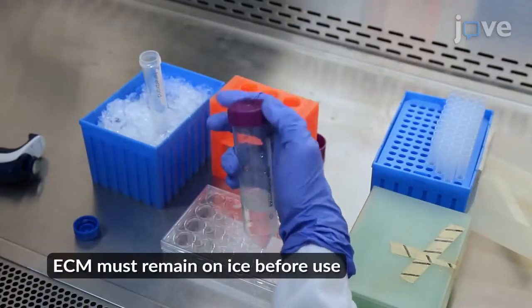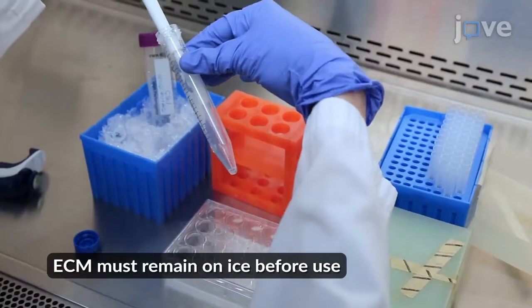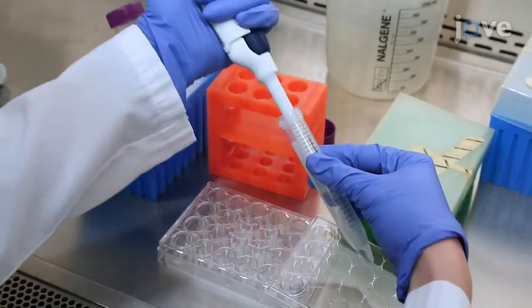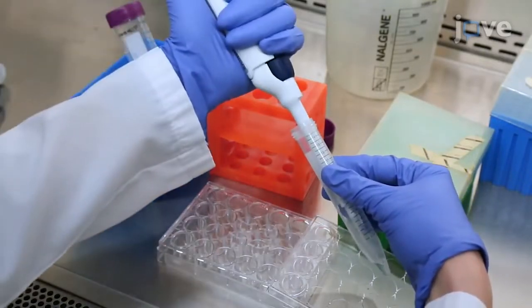Dilute the extracellular matrix, or ECM, 25-fold in cold sterile phosphate-buffered saline. Then add 100 microliters of cold diluted solution into each upper chamber onto the membrane.